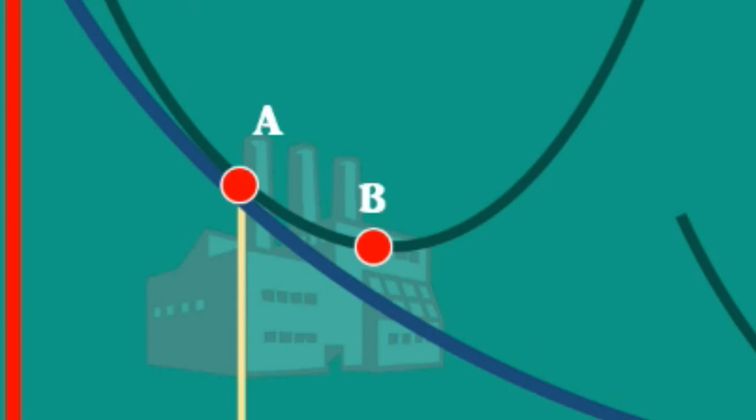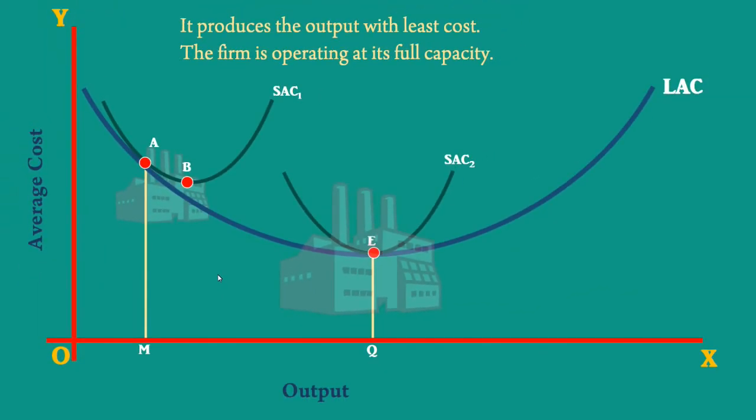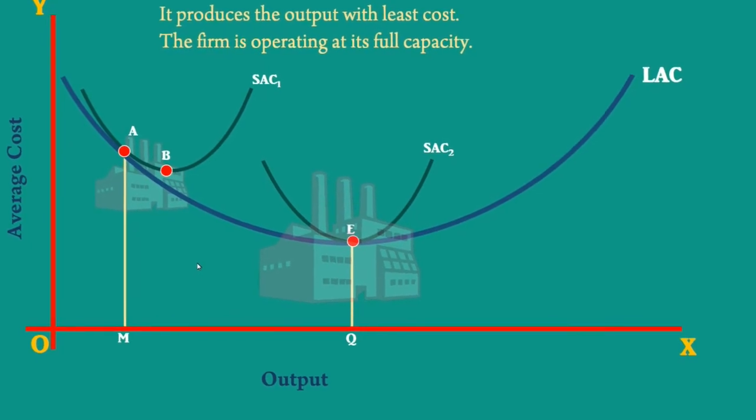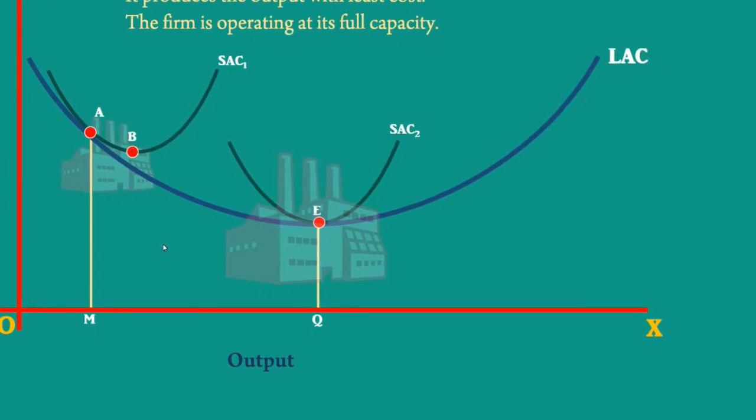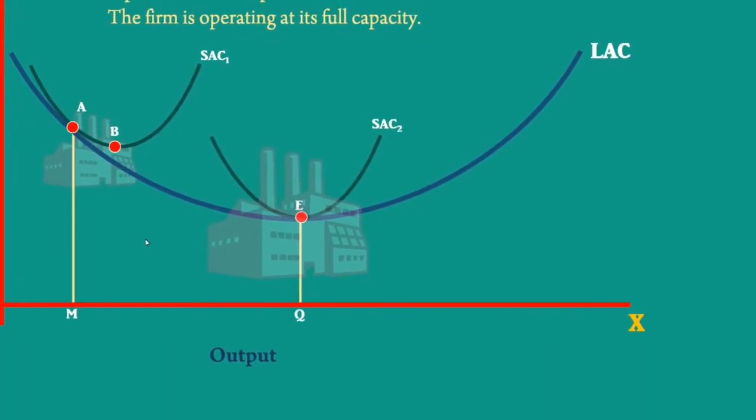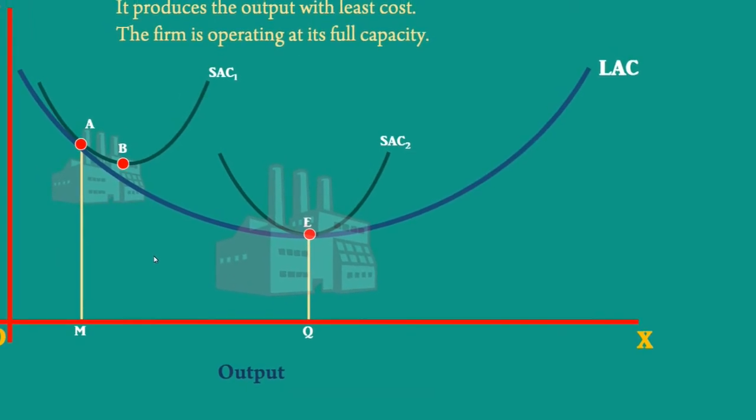The firm is operating at less than its full capacity. We have already seen the plants on the falling side of Long Run Average Cost Curve cannot operate at its full capacity.